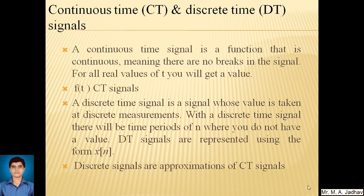Firstly, continuous time signal and discrete time signal. A continuous time signal is a function that is continuous, meaning there are no breaks in the signal. For all real values of t you will get a value. Analog signals are continuous signals actually. A discrete time signal is a signal whose value is taken at discrete measurements. With a discrete time signal there will be time periods of n where you do not have a value. Discrete time signals are represented using the form x of n. Discrete signals are approximations of continuous time signals. Digital signals are discrete signals.